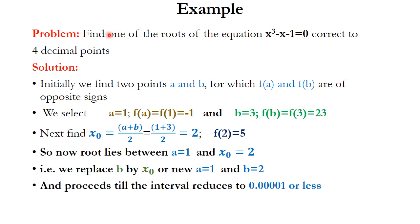Now let's see one example for the bisection method. Find one of the roots of the equation x³ - x - 1 = 0, corrected to 4 decimal places. There will be three roots, so we find one. We select a = 1 and b = 3 such that f(1) = 1 - 1 - 1 = -1 and f(3) = 27 - 3 - 1 = 23, confirming f(a) and f(b) are of opposite signs.